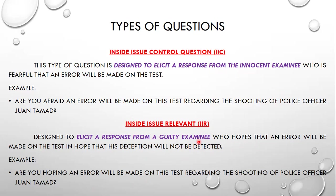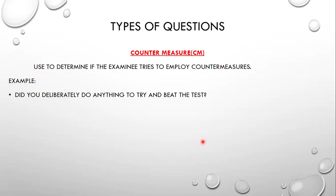The inside issue control (IIC) elicits responses from innocent examinees, while the inside issue relevant (IIR) elicits responses from guilty examinees. Another type is the countermeasures question, used to determine if the examinee tries to employ countermeasures. Example: 'Did you deliberately do anything to try and beat the test?' — because some examinees try to beat the polygraph machine.